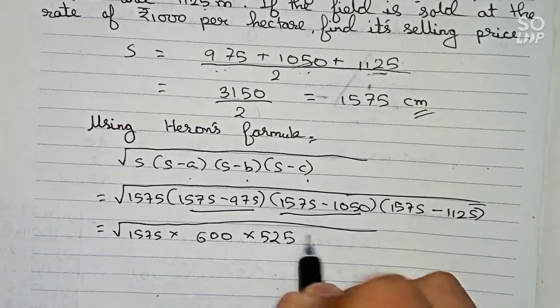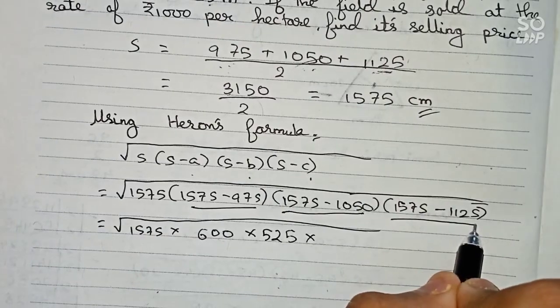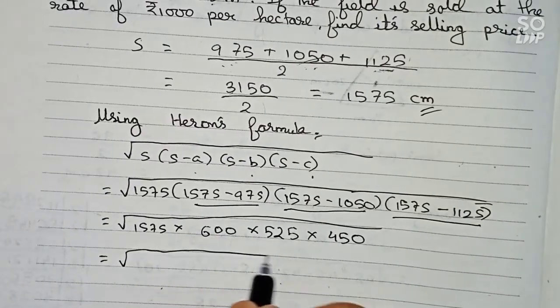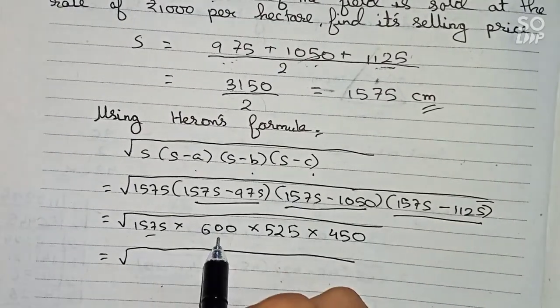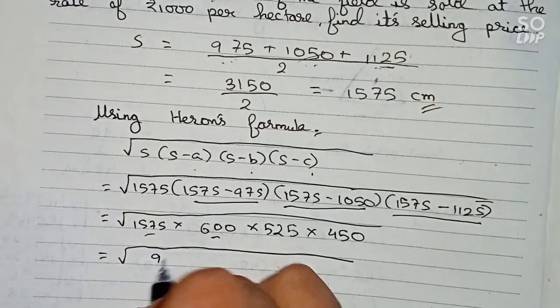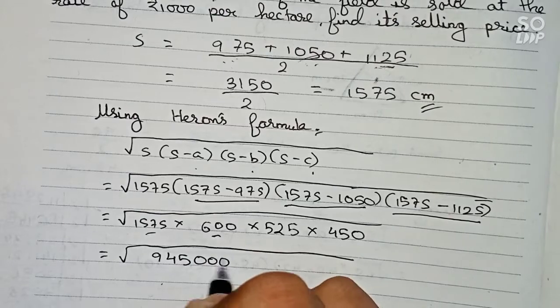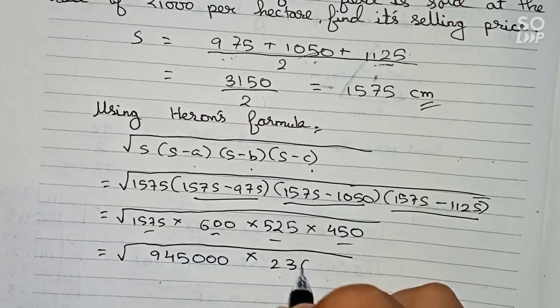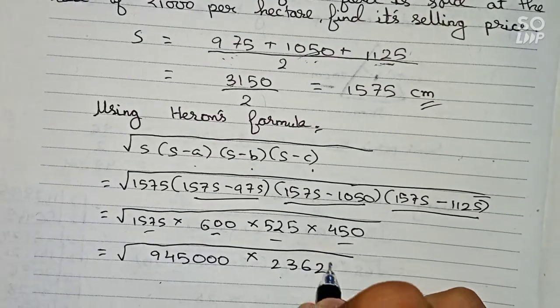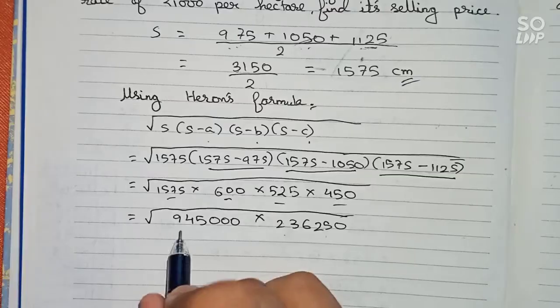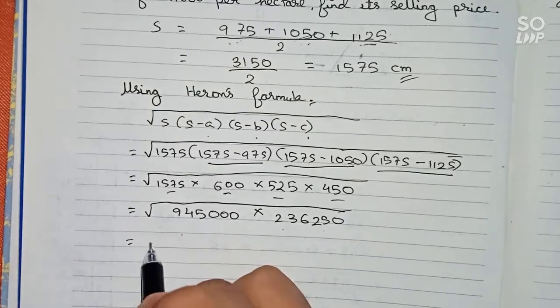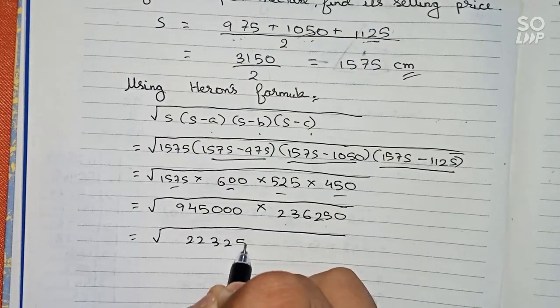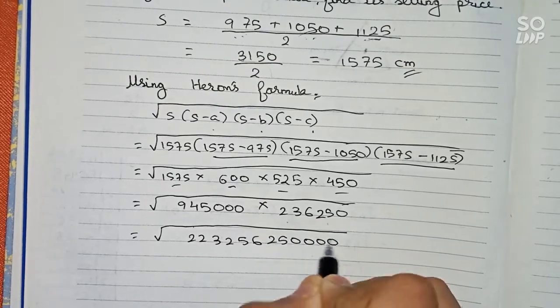So now we multiply: 1575 and 600 first, so that is equal to 945,000 multiplied by 525 into 450, that is equal to 236,250. So now if we multiply this number it will become a big number, so the number will be 223,256,250,000.